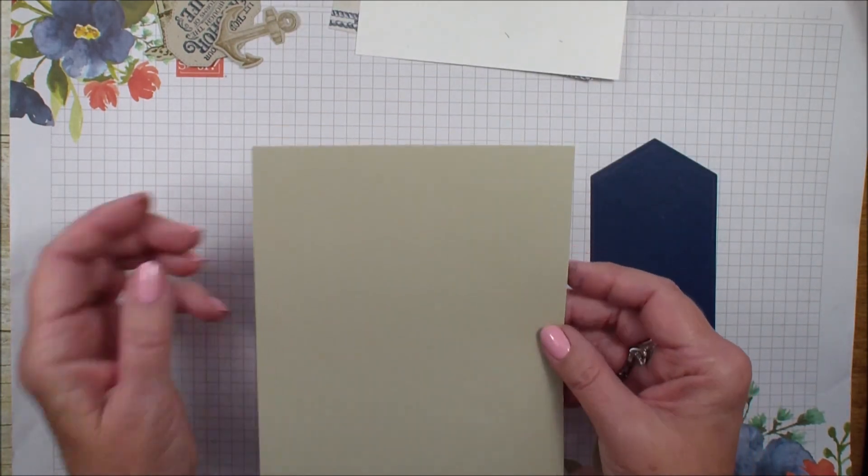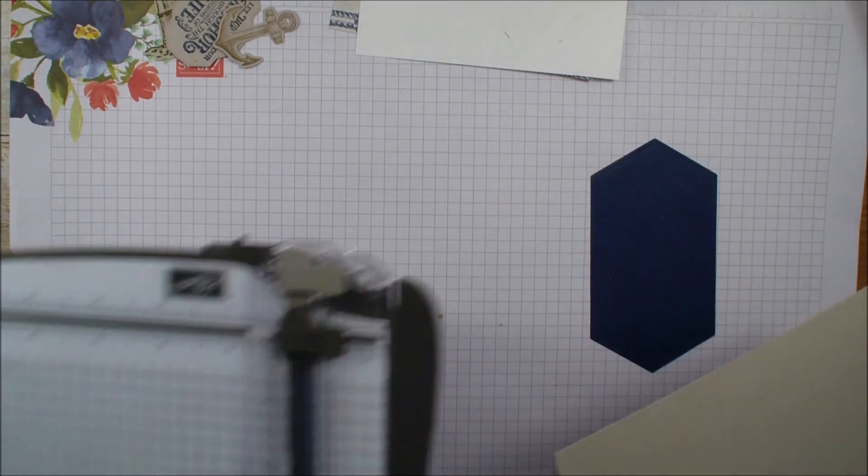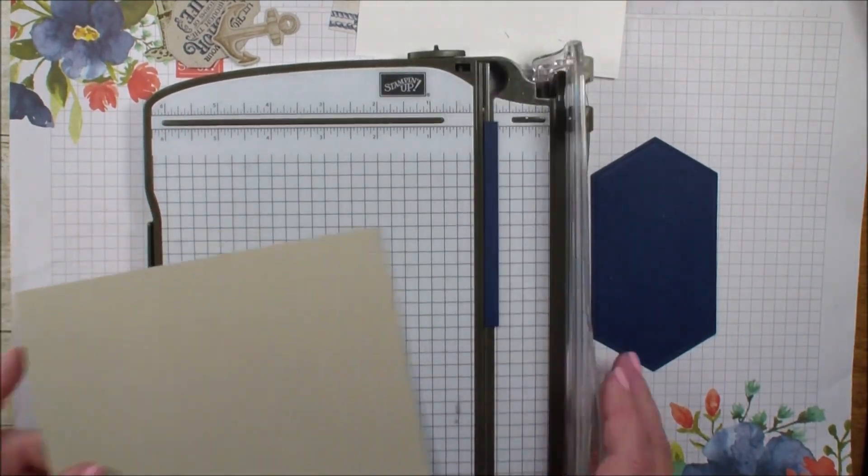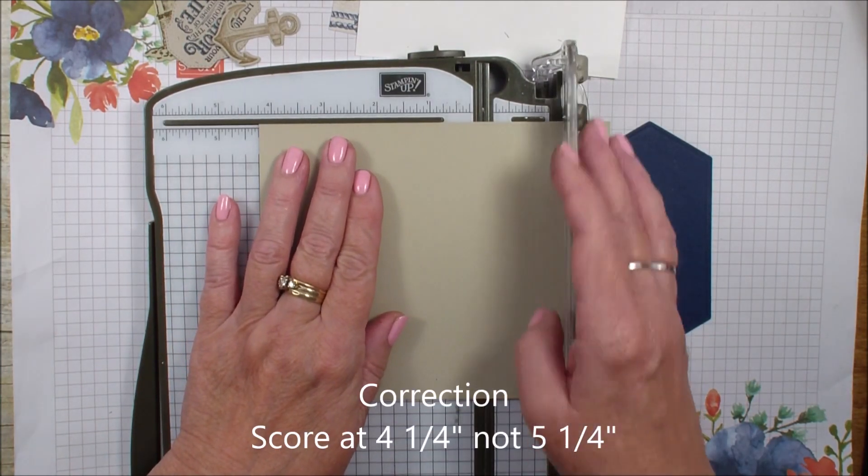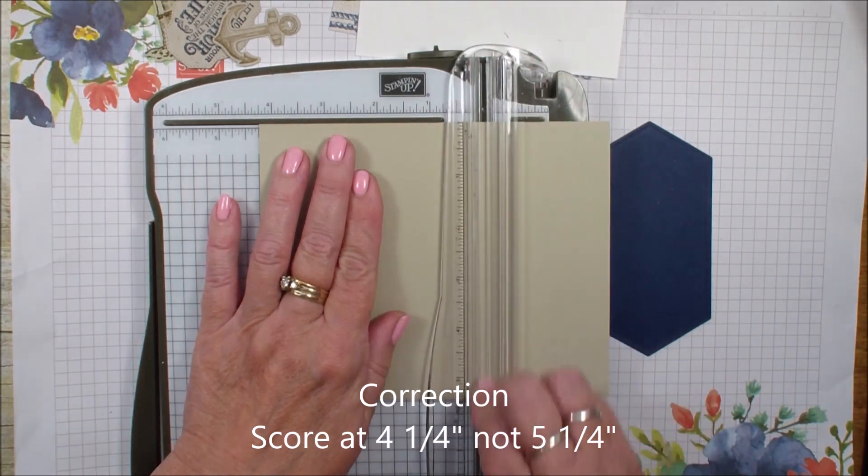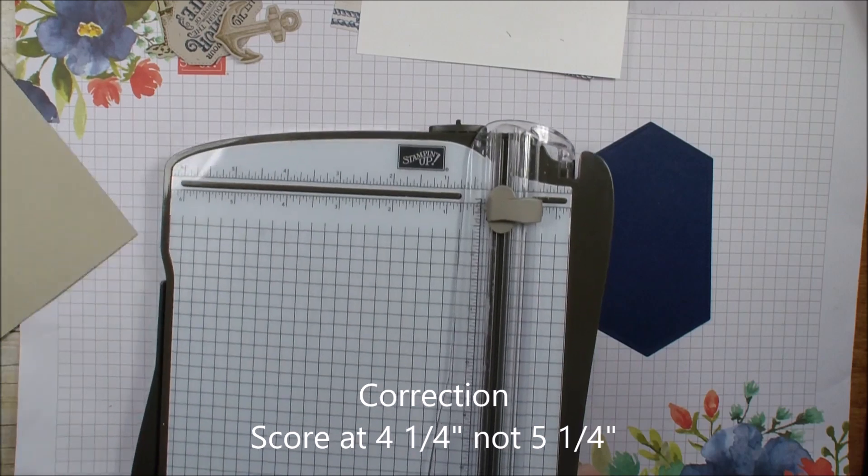Then I have a piece of Sierra Sand. This measures five and a half by six and a half. I'm going to bring in my trimmer and I am going to score that at the five and a quarter. This is just going to make our flap card.